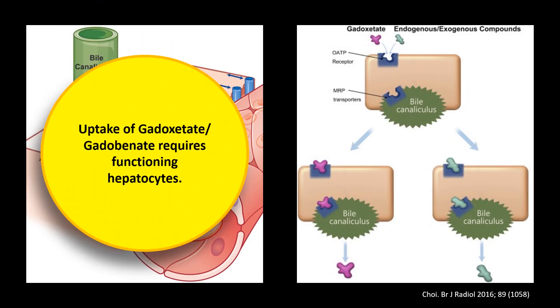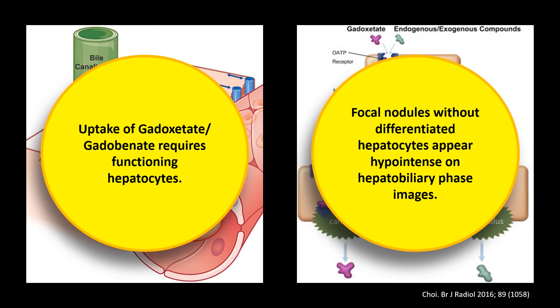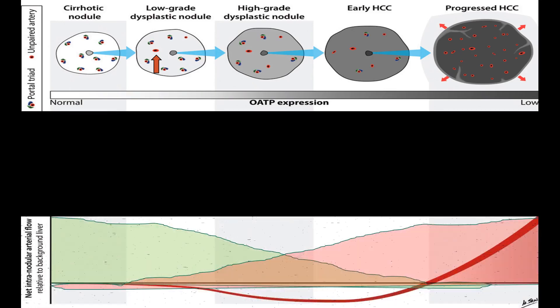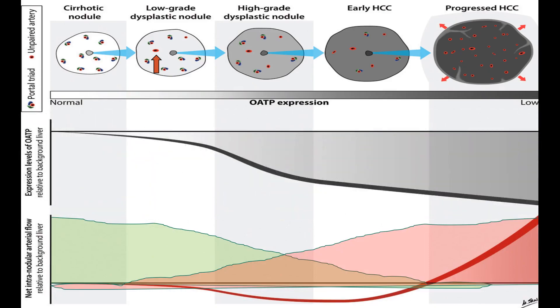This is a very important point: uptake of gadoxetate or gadobenate requires functioning hepatocytes. Focal nodules without differentiated hepatocytes appear hypointense on hepatobiliary phase images. In hepatocarcinogenesis, cirrhotic nodules start developing unpaired arteries and form low-grade dysplastic nodules, then with increasing atypia, high-grade dysplastic nodules are produced with fewer portal tracts. With progressive malignancy, nodules lose portal blood supply and gain neo-arterial blood supply. Additionally, with increasing malignancy, the hepatocytes also lose OATP transporters and cannot take up contrast.